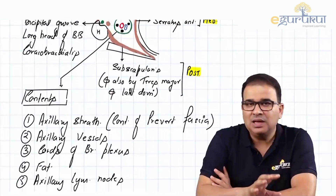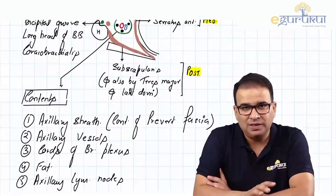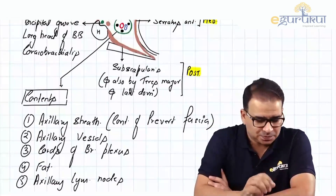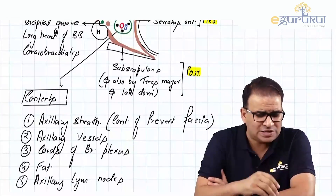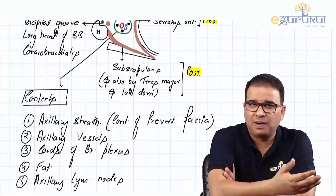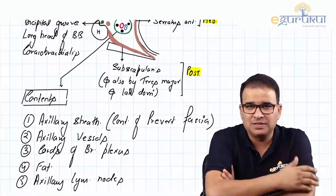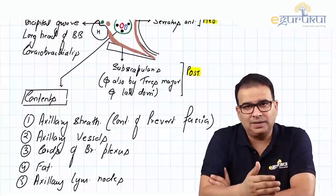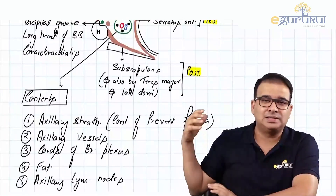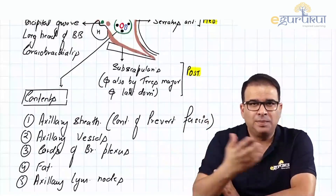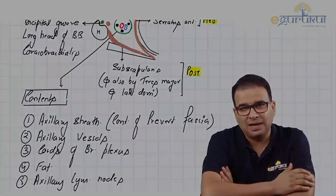That is about the contents of the axilla. The axillary artery has already been discussed in the blood vessel part. The other major content, the brachial plexus, will be discussed in the next segment.